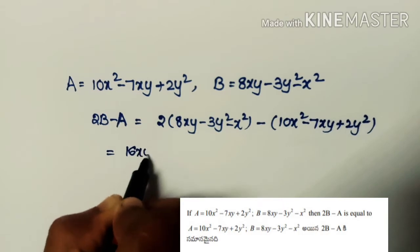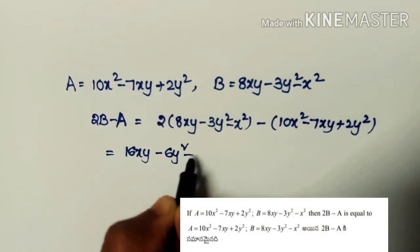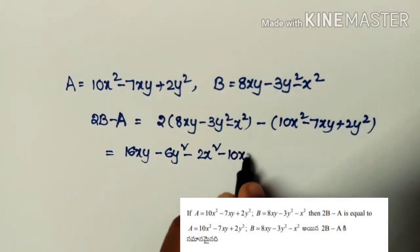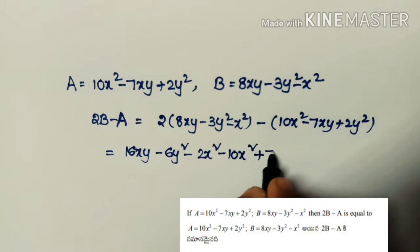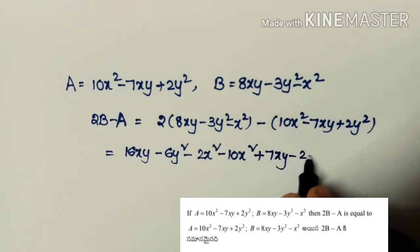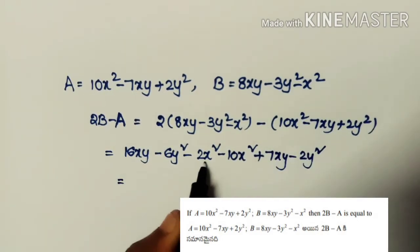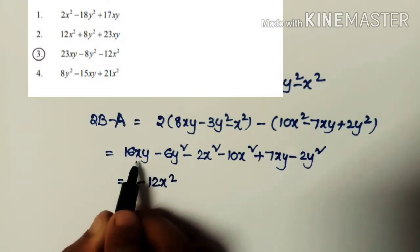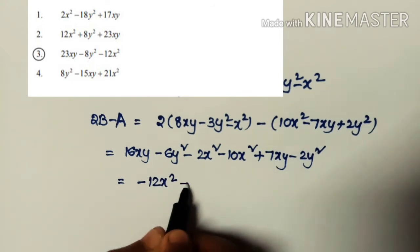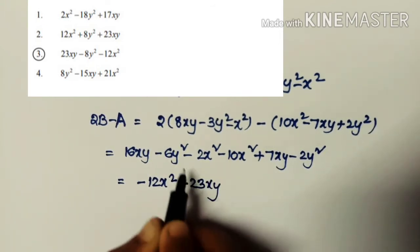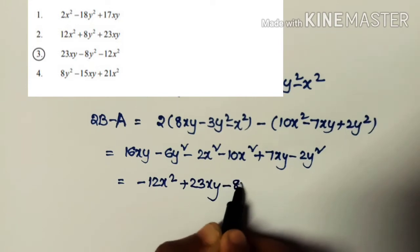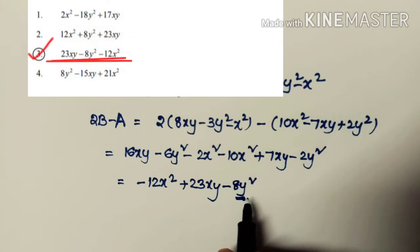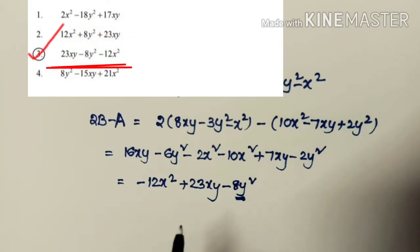Applying the minus sign to A: −10x² + 7xy − 2y². Combining: −2x² − 10x² = −12x²; 16xy + 7xy = 23xy; −6y² − 2y² = −8y². So 2B − A = 23xy − 8y² − 12x², which is the third option.